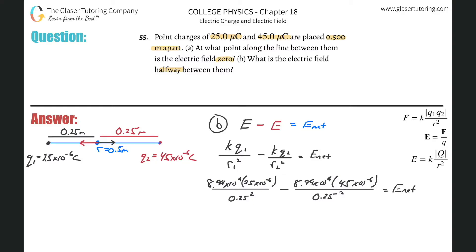So all we have to do now is throw it into the calculator. We have 8.99 × 10⁹ times 25 × 10⁻⁶ divided by 0.25 squared, minus 8.99 × 10⁹ times 45 × 10⁻⁶ divided by 0.25 squared. And what do we get? Everything looks good, so we're going to have a value of about negative 2.88 × 10⁶ newtons per coulomb.